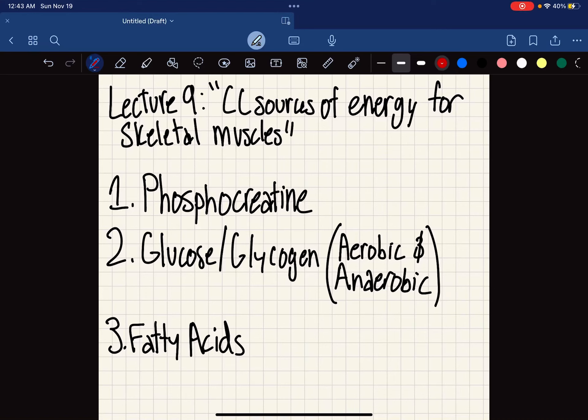My video is on comparing and contrasting sources of energy for skeletal muscles. There are three main energy sources: phosphocreatine, glucose and glycogen, and fatty acids. Within glucose and glycogen, there are aerobic and anaerobic processes.